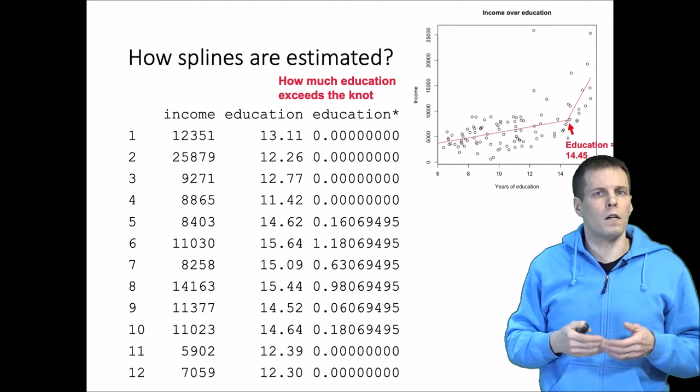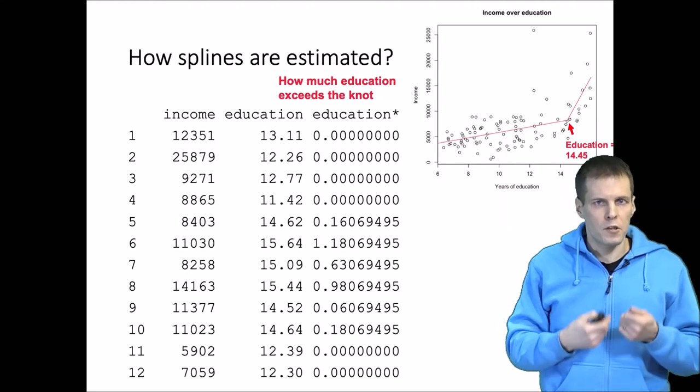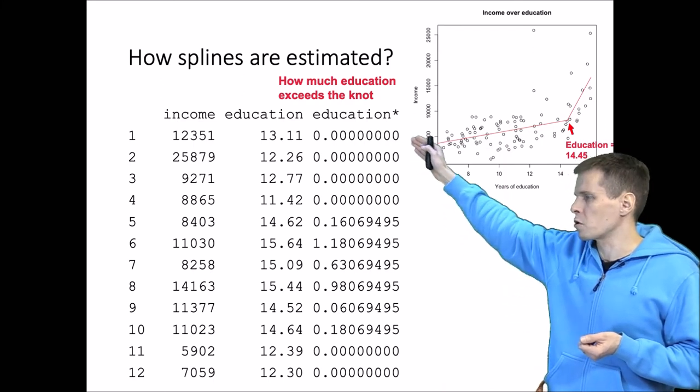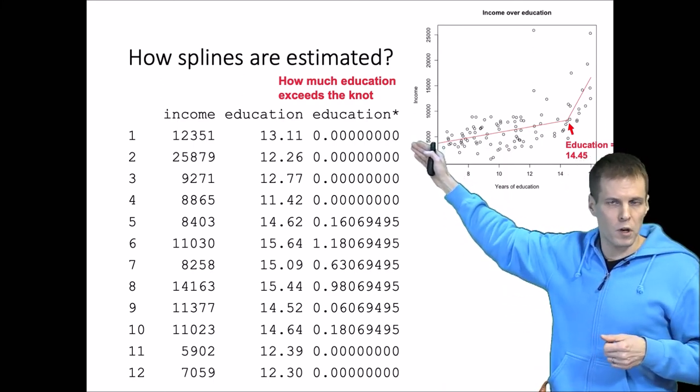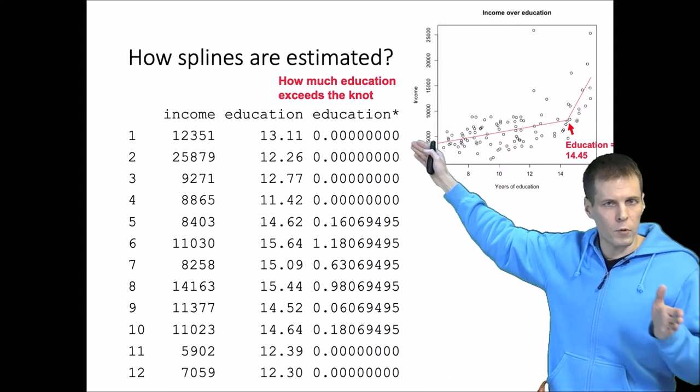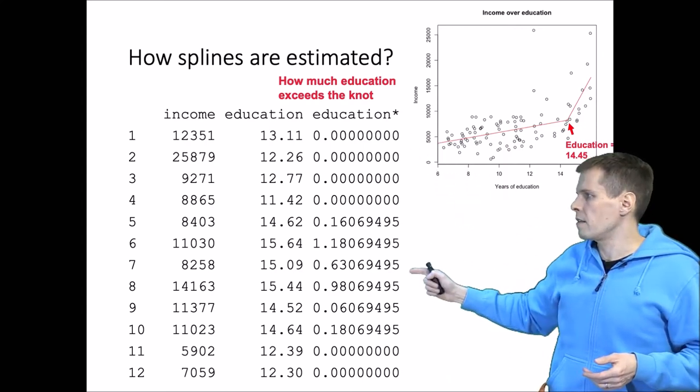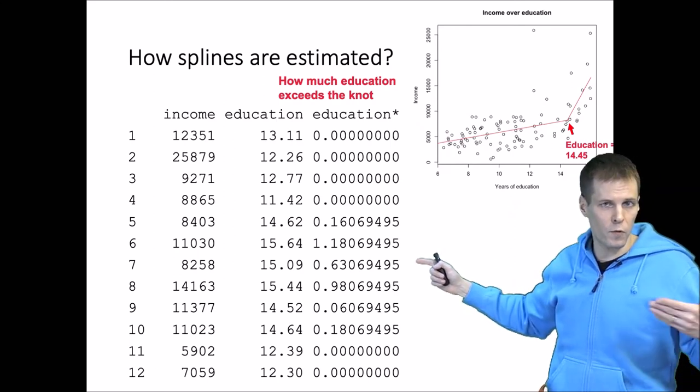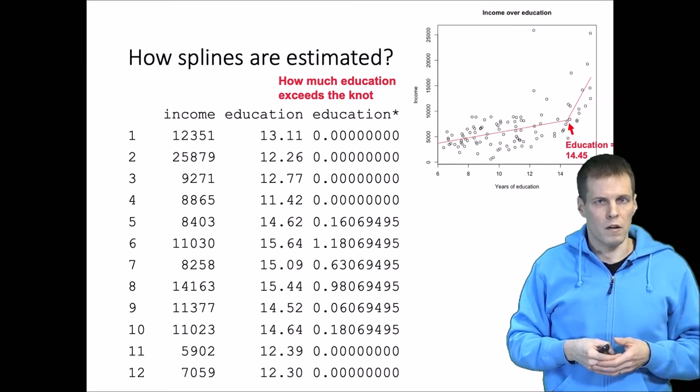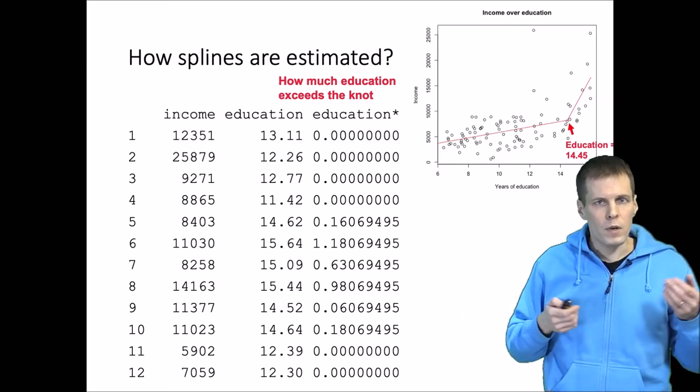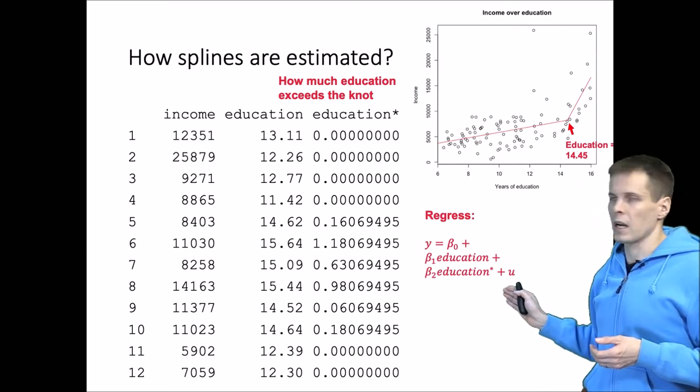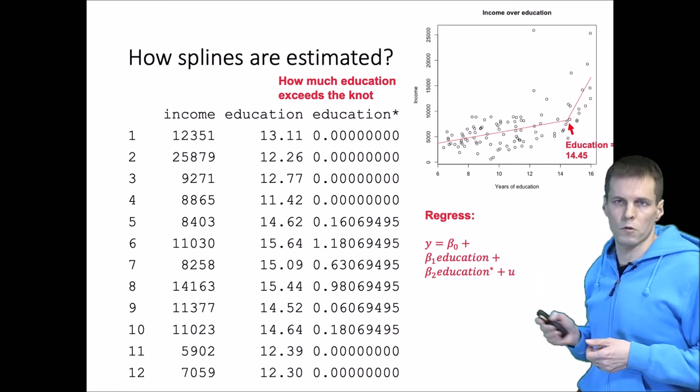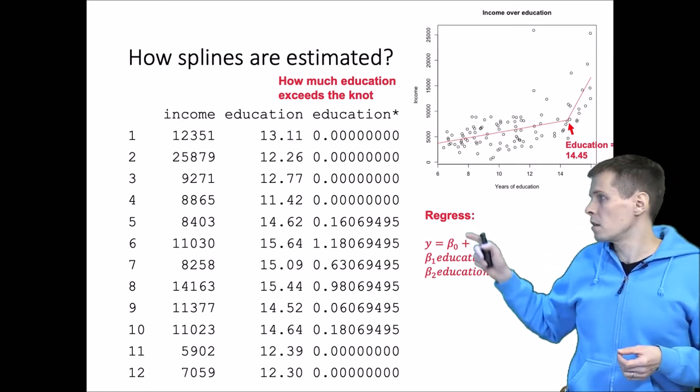So if an occupation has less education than the knot value then education star is zero. For example the first observation is 13.11 years of education. It's not more than 14.45 so the value is zero. And then this observation here has education which exceeds 14.45 so the value of education star is positive. And then we simply run a regression model where we have education, education star, and then plus the U term here and that gives us the regression spline.